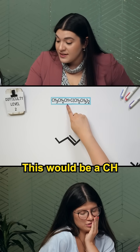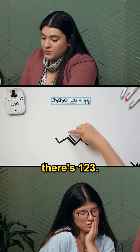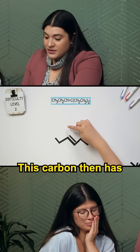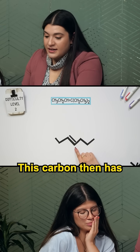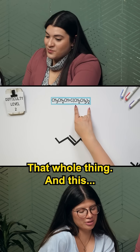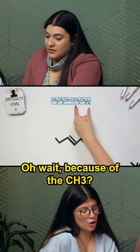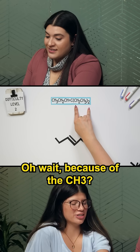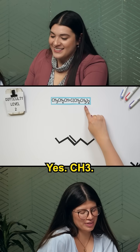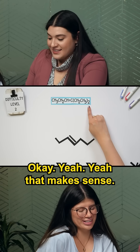This would be a CH because if we counted — one, two, three — and there is a hydrogen here, so there's one. This carbon then has that whole thing. Is this a longer carbon chain or branching? That's a carbon chain — because of the CH3, that makes it automatically branching. CH3 because it does have an end. Yeah, that makes sense.